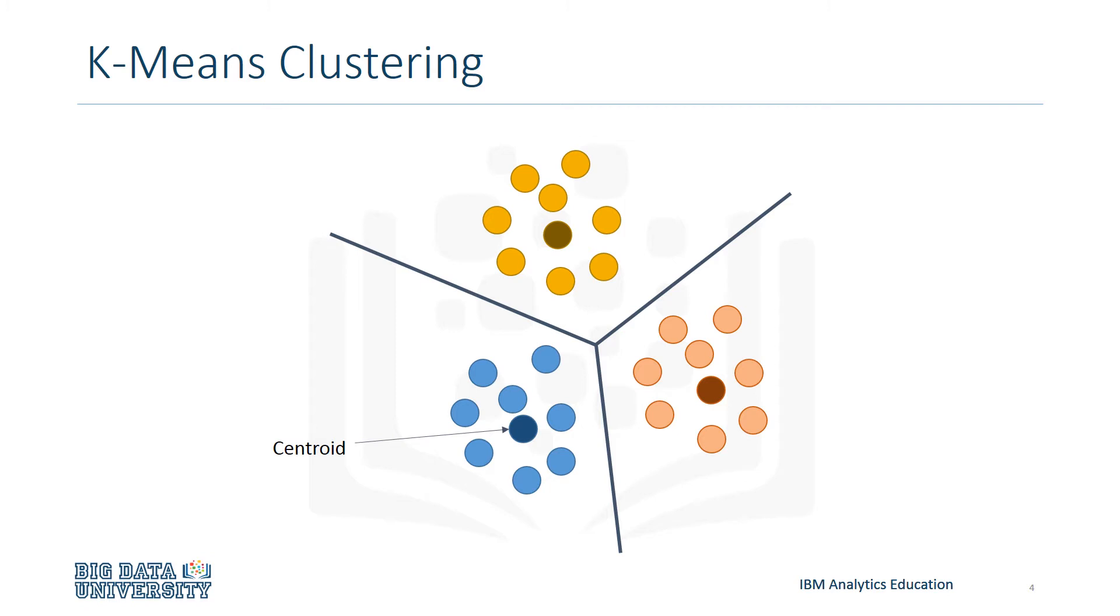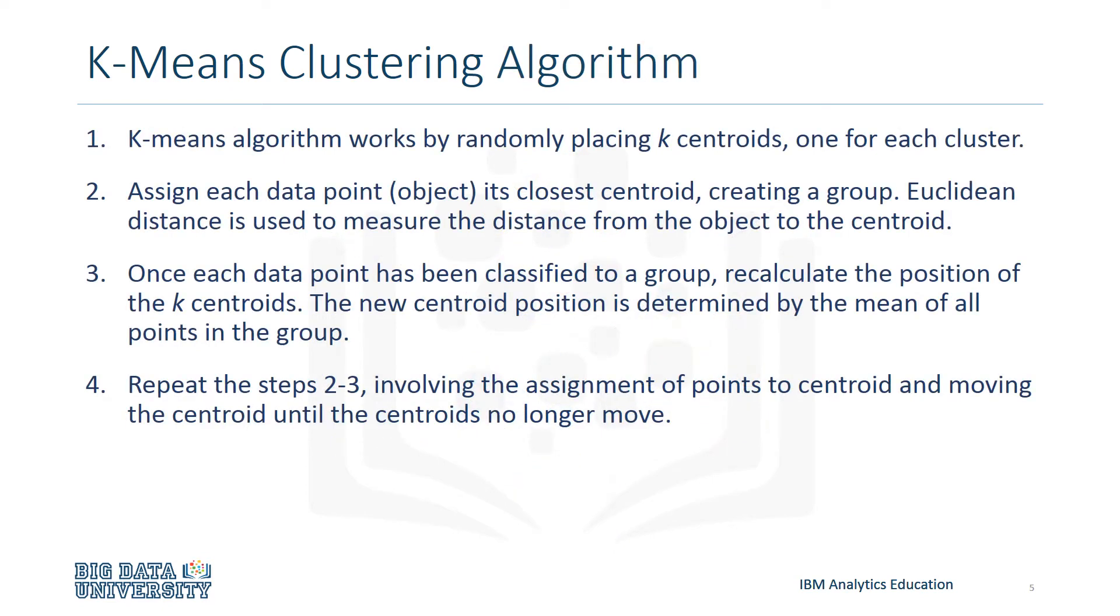Now let's define the algorithm more concretely. A K-means algorithm works by randomly placing k centroids, one for each cluster. The farther apart the clusters are placed, the better. There is no specific number of centroids that you need to have. This is based off of how many clusters you want to find. Therefore, there will be a centroid for each cluster.